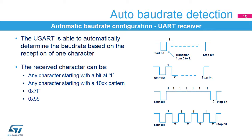A 0x7F character frame: in this case, the baud rate is updated first at the end of the start bit, then at the end of bit 6. Or a 0x55 character frame: in this case, the baud rate is updated first at the end of the start bit, then at the end of bit 0, and finally at the end of bit 6. In parallel, another check is performed for each intermediate transition of the RX line.